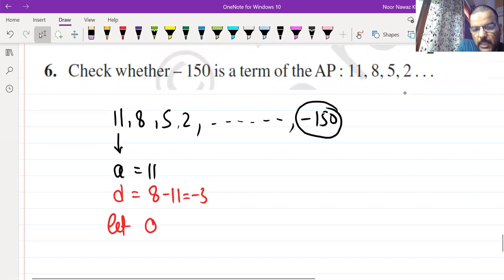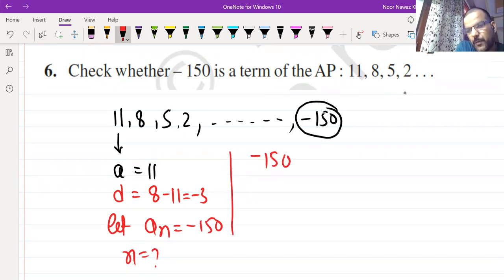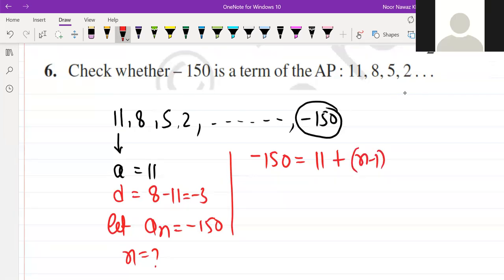Let which term is the position, is an, minus 150. We have to be removed from n. What is the position? So if you have direct, you can keep it. Minus 150 will be A plus n minus 1 into d, and d is our minus 3.